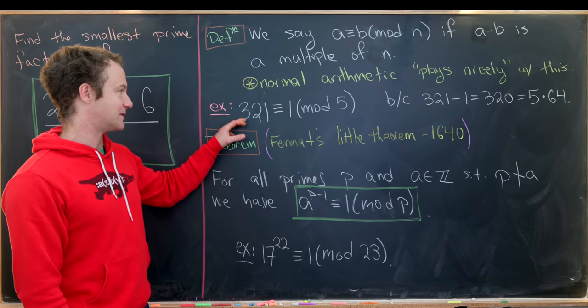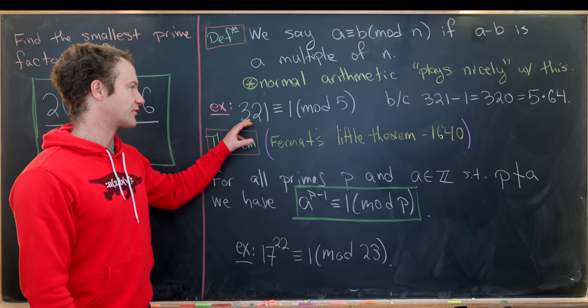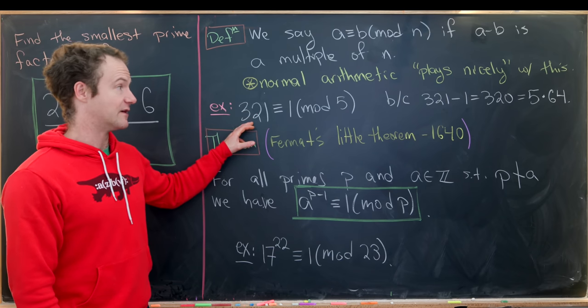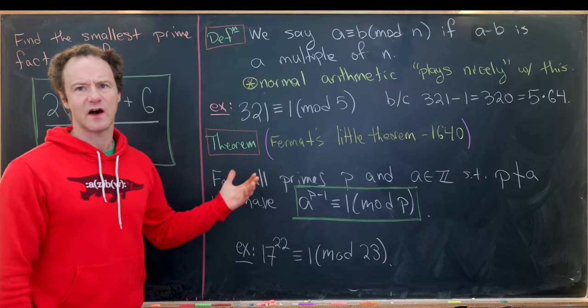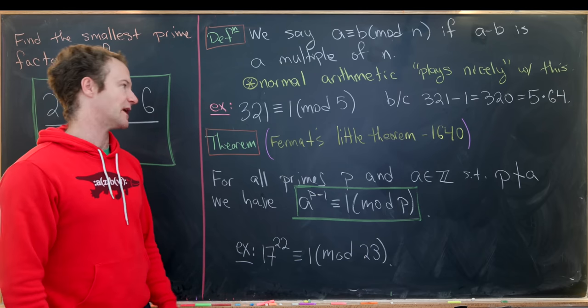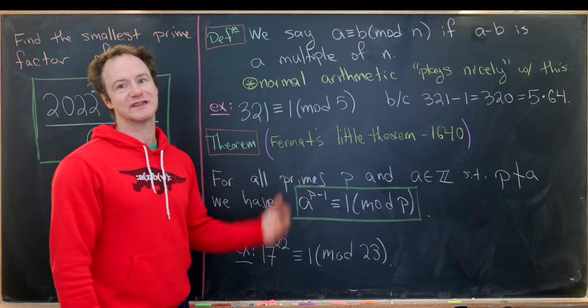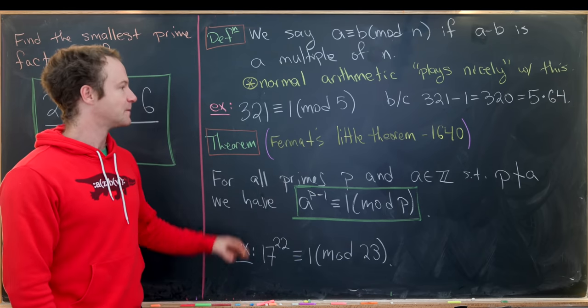That most definitely happens in this case. If we divide 321 by 5, we get a remainder of 1. If we divide 1 by 5, we also get a remainder of 1. It's just that the quotient is 0 in that second case.